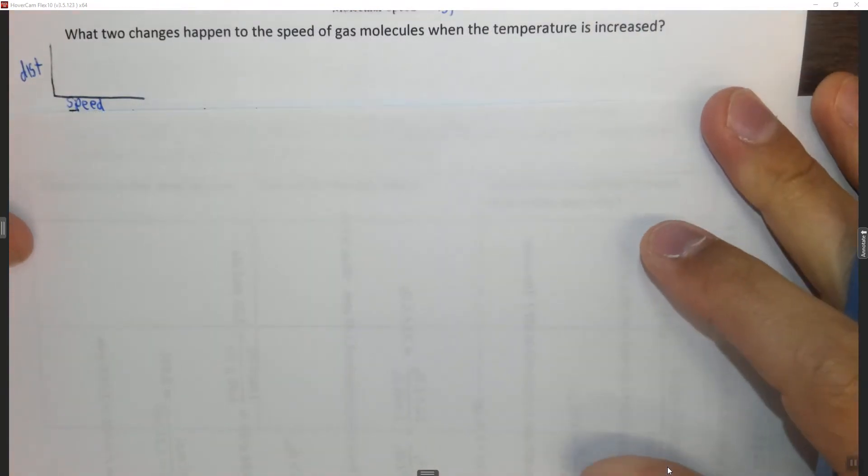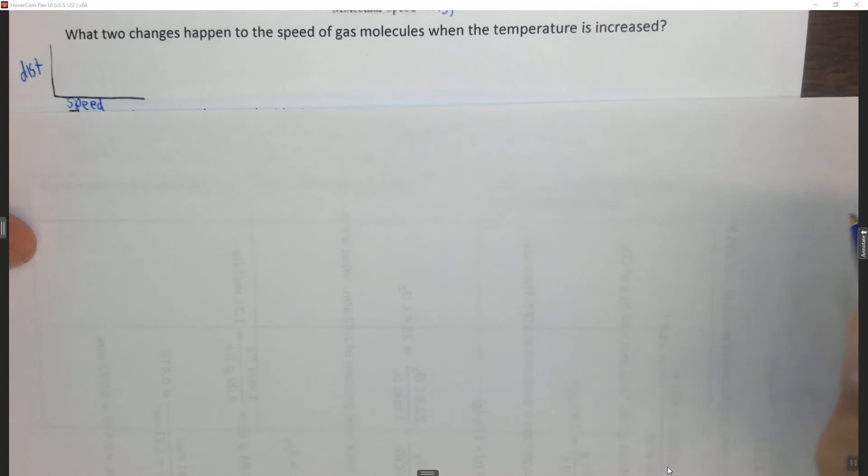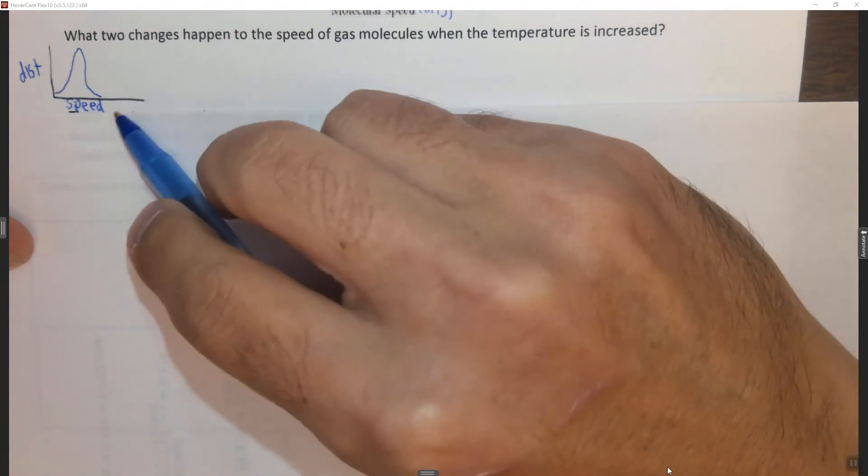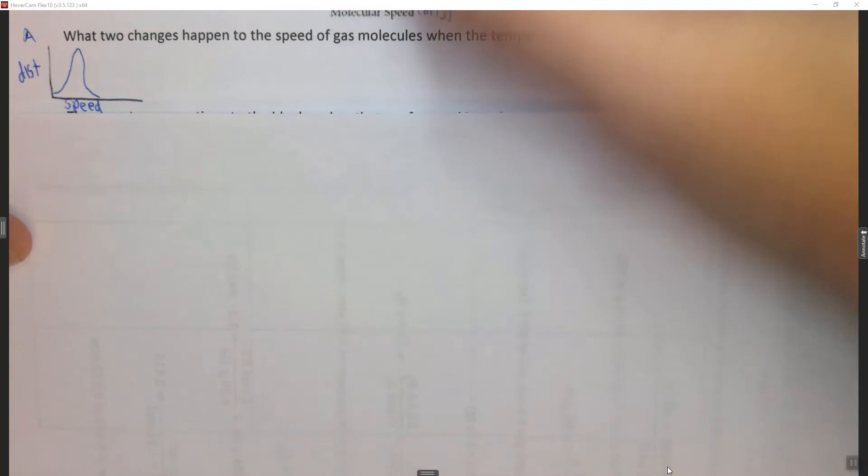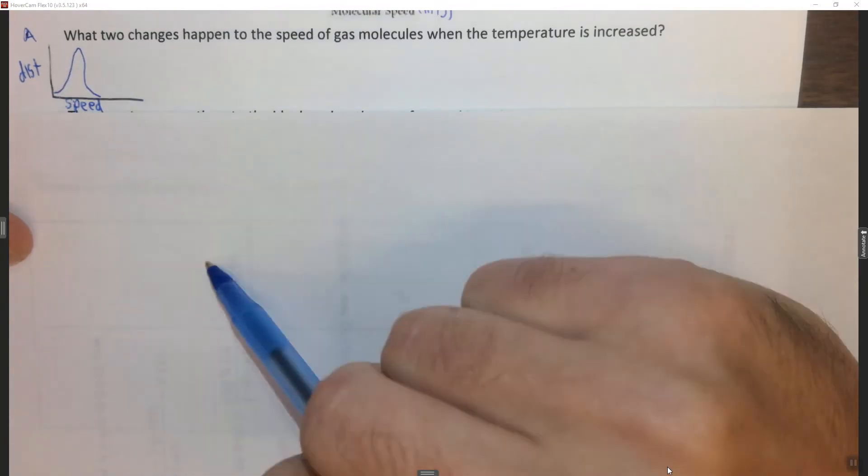And in this case we don't have different gases. In the previous case we had one gas. So let's say we end up with something that looks like this at speed a, or excuse me at temperature a. And temperature a is the lower temperature.